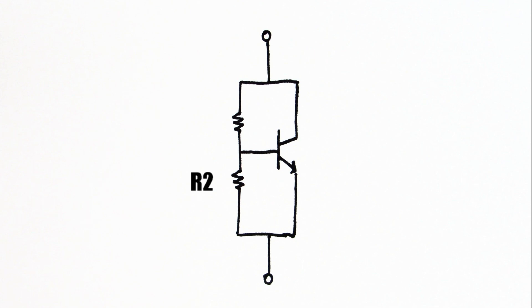One key concept in understanding the VBE multiplier is that the voltage across R2 is equal to the base emitter voltage. This is because the two are in parallel.